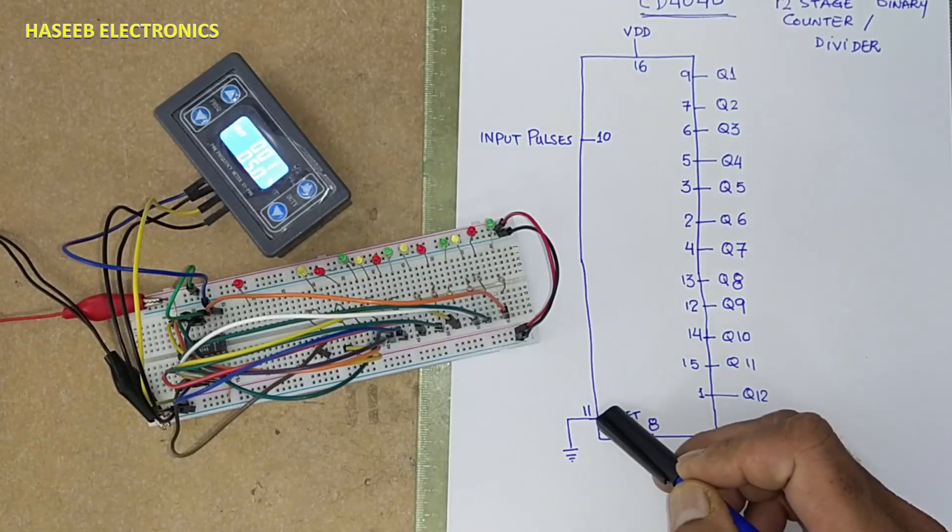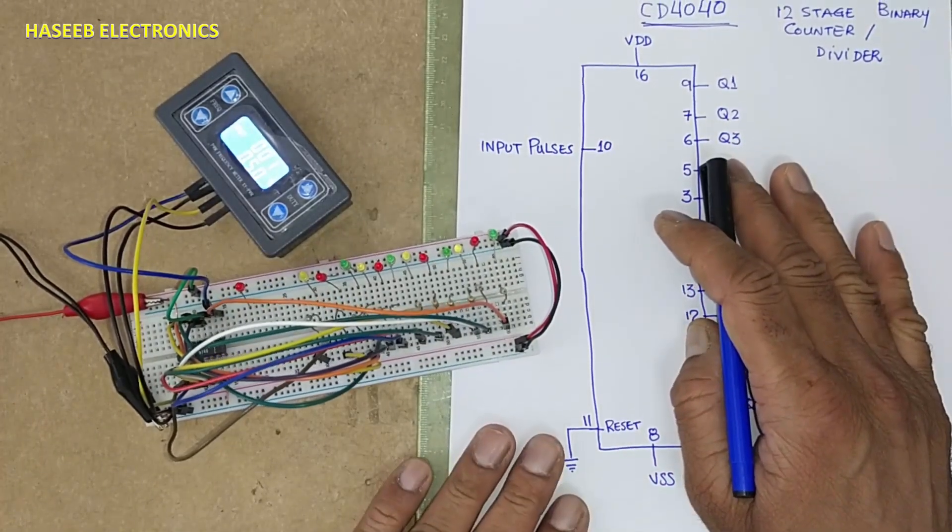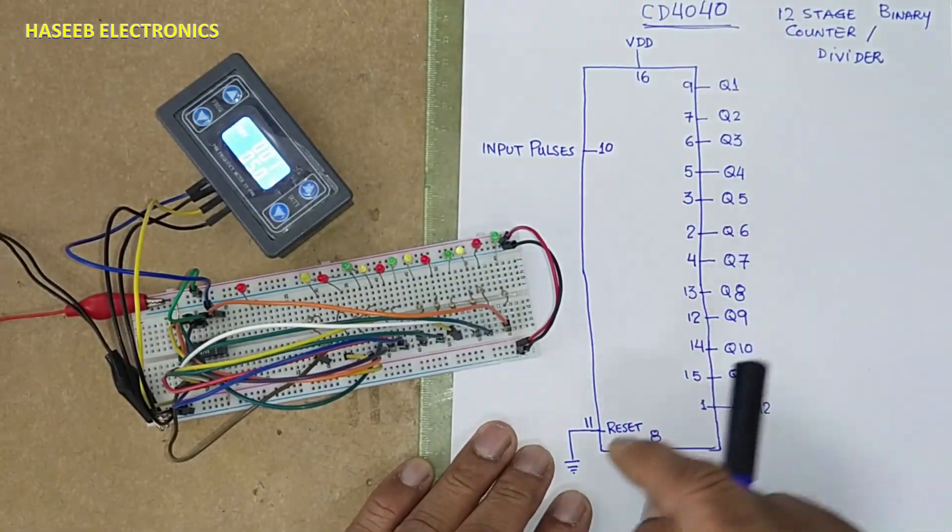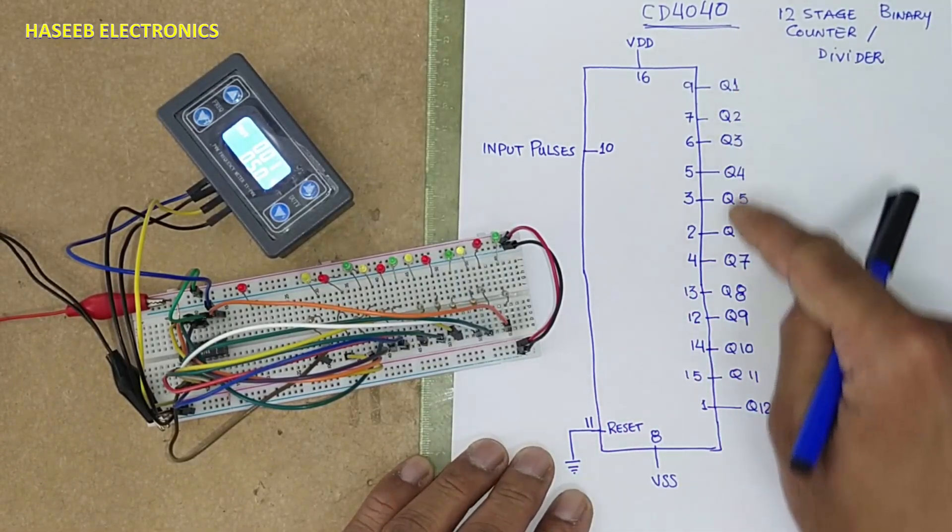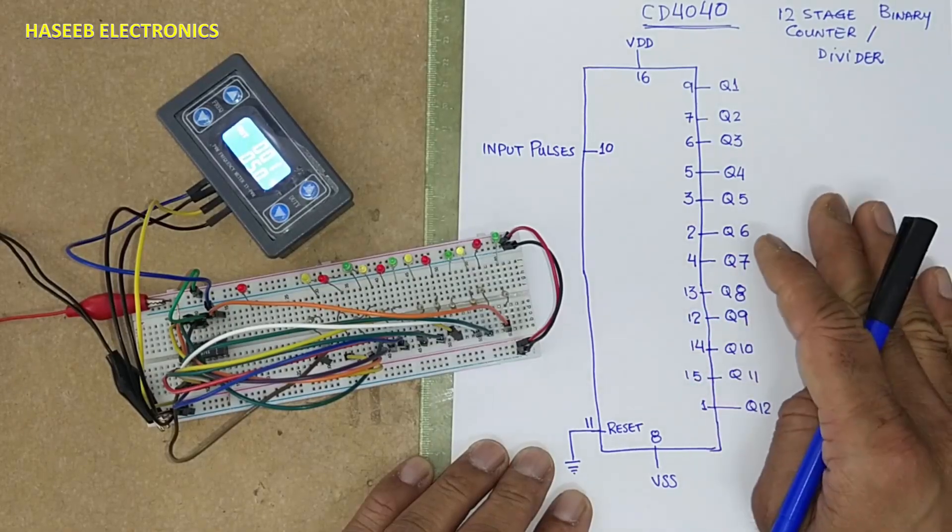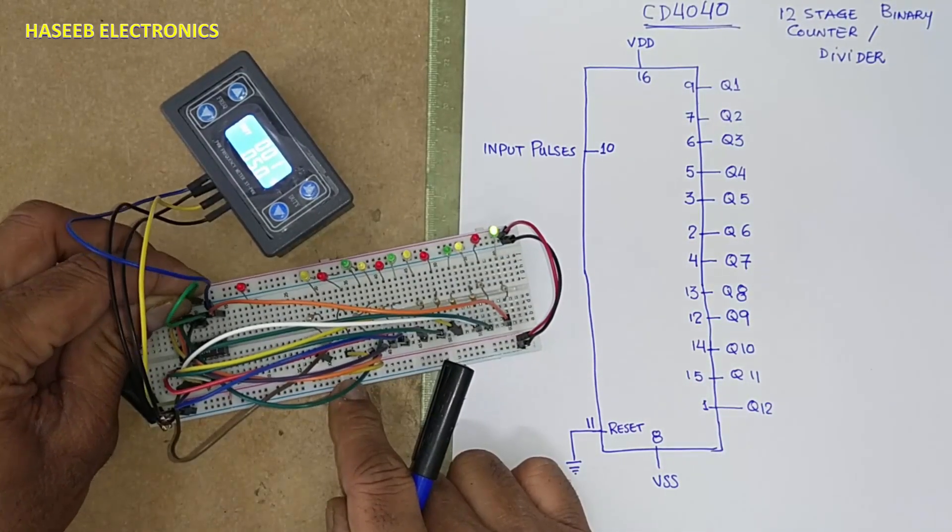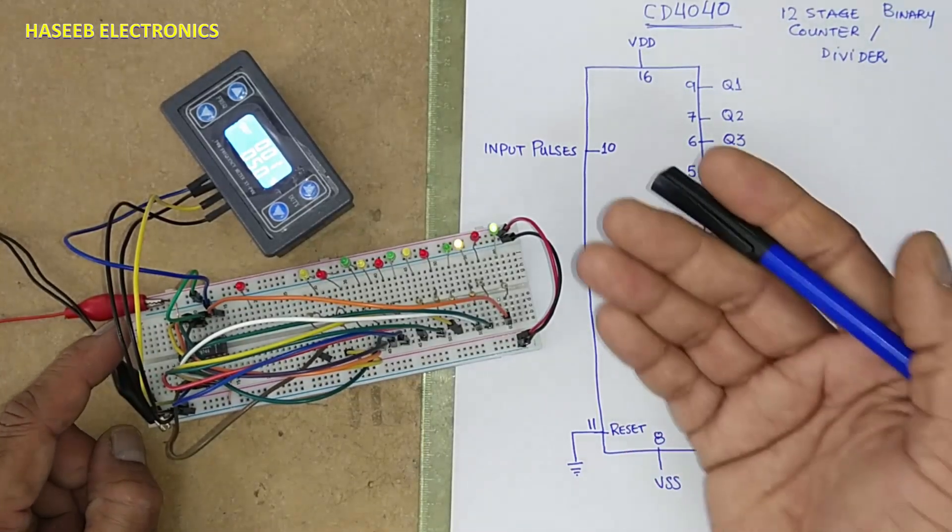When pin number 11 is high, this IC will not work. It will remain disabled and anytime during counting when this pin is pulled up high, all the counters will reset to 00. I will connect to low side. When it is connected to ground, it will start counting.